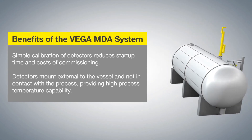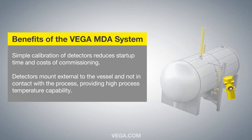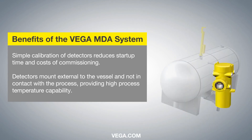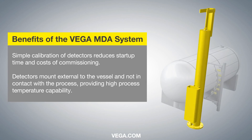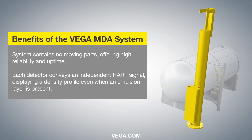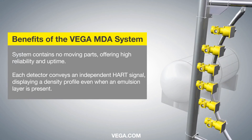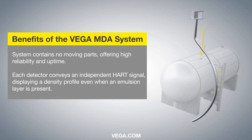Benefits of the Vega MDA System: Simple calibration of detectors reduces start-up time and costs of commissioning. Detectors mount external to the vessel and not in contact with the process, providing high process temperature capability. The system contains no moving parts, offering high reliability and uptime. Each detector conveys an independent signal, displaying a density profile even when an emulsion layer is present.